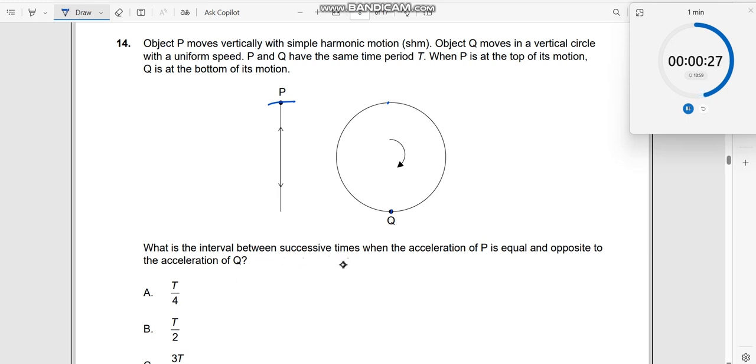What is the interval between successive times when the acceleration of P is equal and opposite to the acceleration of Q? When P is at this point and it's trying to come downwards, this is its acceleration. When it comes here, A will be 0, and when it comes here, acceleration will be in the reverse direction. When it takes a turn, it goes like this.